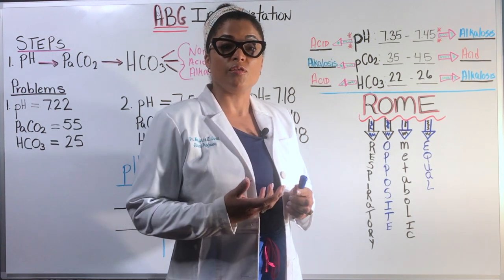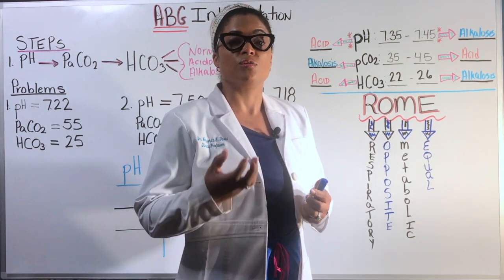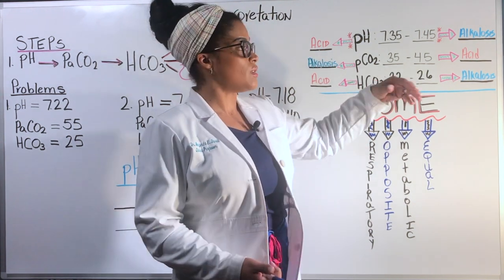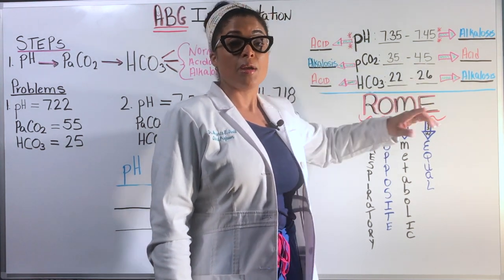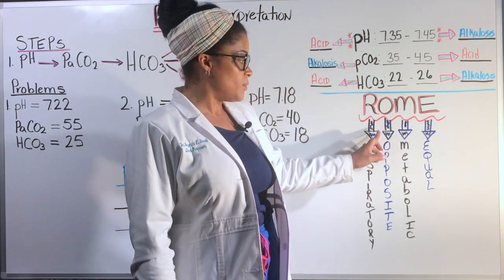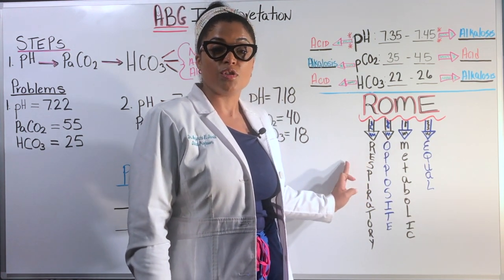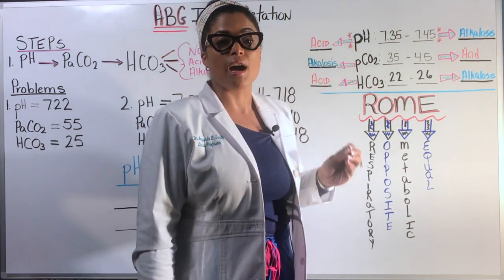For example, if you have a patient that has respiratory acidosis due to the retention of CO2, their CO2 level is going to be elevated. So it's going to be above 45, making it an acidic environment. And because we know that the pH and the CO2 is going to be opposite, if my CO2 is high, my pH is going to be low. So they're opposite of each other.